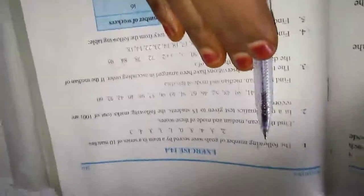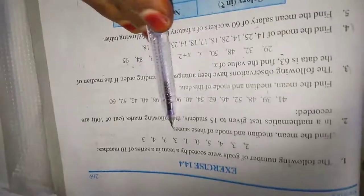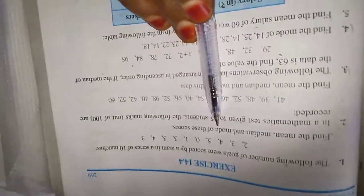In last class we completed exercise 14.3, now 14.4. The following numbers of goals were scored by a team in a series of 10 matches. Find the mean, median and mode of this data. We learned mean, median, mode last year, so we will just recall here.